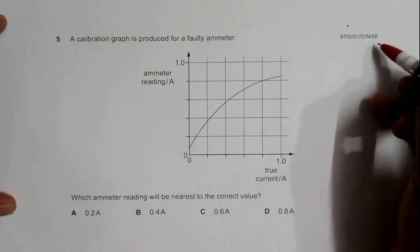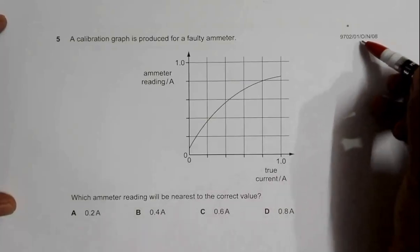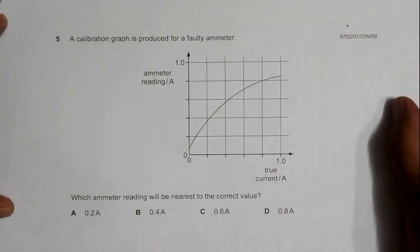Hello folks, this is 2008 October-November paper one. At the time there weren't any varieties, only one variety, so it's just paper one. Question number five is concerned with the calibration of a faulty ammeter.